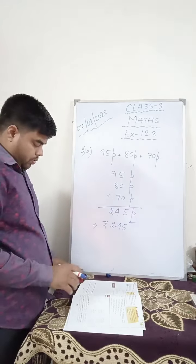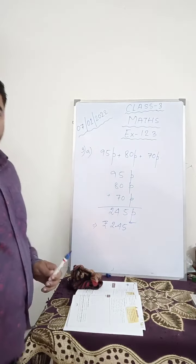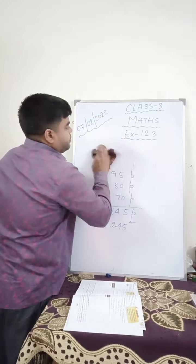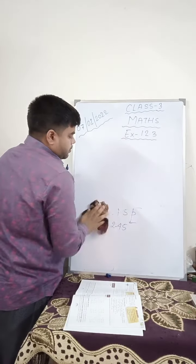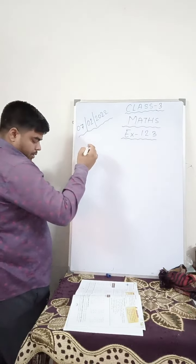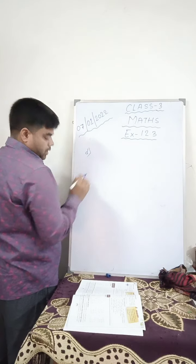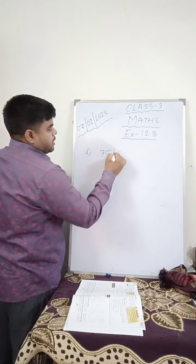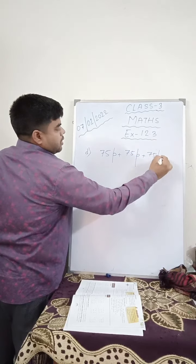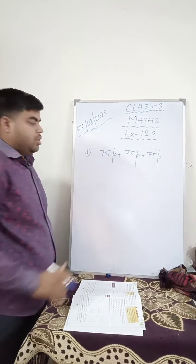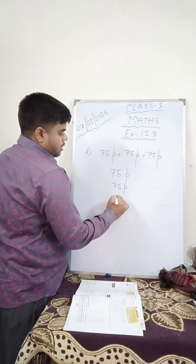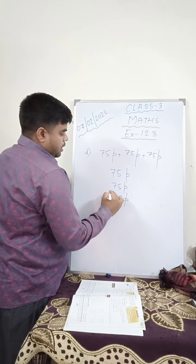Now suppose one more. Let me show you number 3d: 75 paisa plus 75 paisa plus 75 paisa. Suppose you add this. You write here 75 paisa, 75 paisa, and 75 paisa. You add.